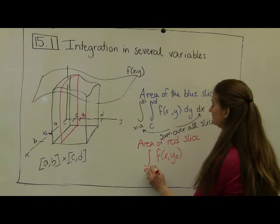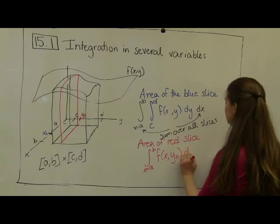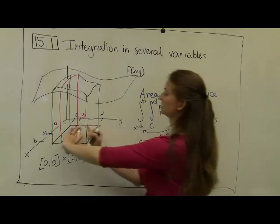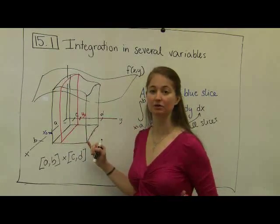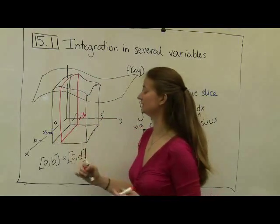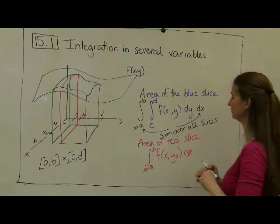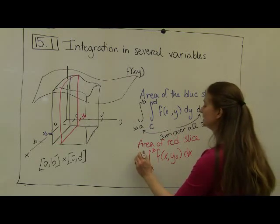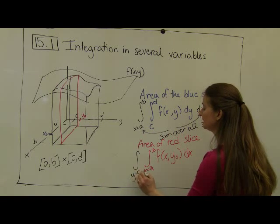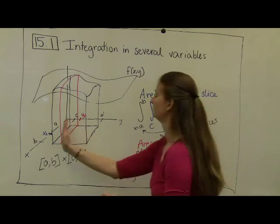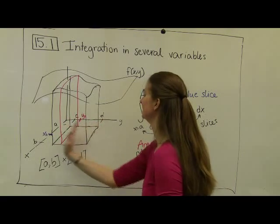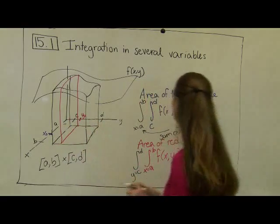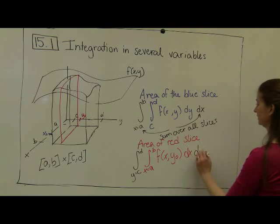So here, my x is going from a to b, dx, because really it's just this flat area. But then I want to sum over all of the slices. And so I'm going to sum in the y direction, as my slices go through every single slice of bread, as I go from y equals c all the way to where y equals d, dy.